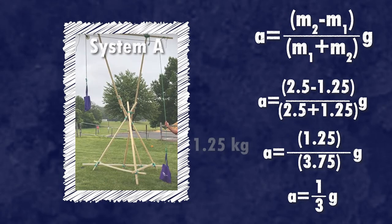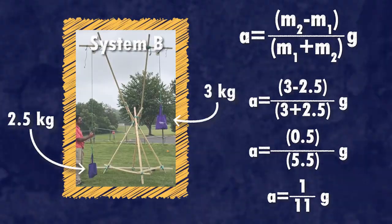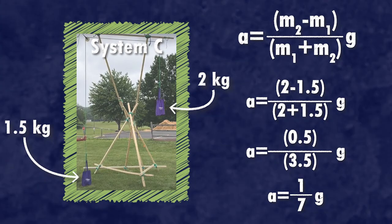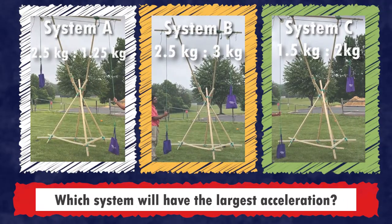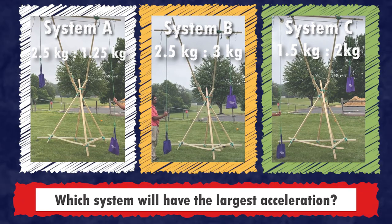In system A, the ratio of the difference in masses to the total mass is 1 to 3. In system B, the ratio is 1 to 11, and in system C, it's 1 to 7. Based on this, we can predict that system A will accelerate the fastest, followed by system C, and system B will move the slowest.